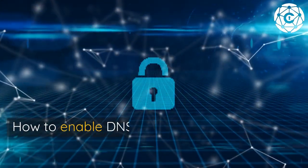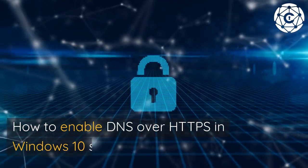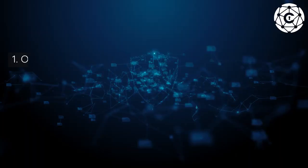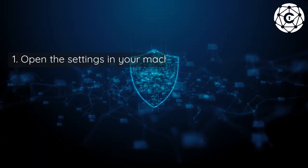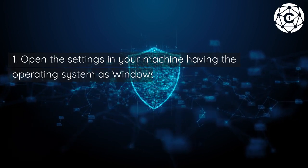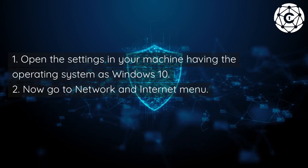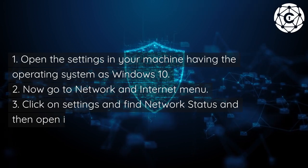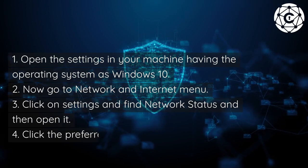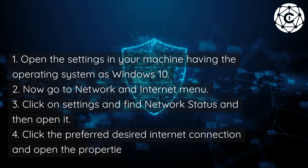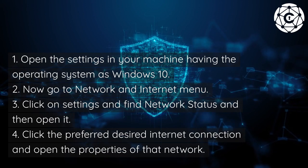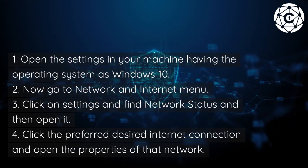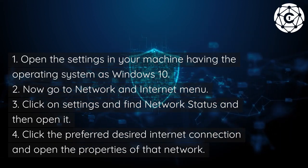How to enable DNS over HTTPS in Windows 10 settings. Step 1: Open the Settings on your Windows 10 machine. Step 2: Go to the Network and Internet menu. Step 3: Click on Settings, find Network Status, and open it. Step 4: Click the preferred internet connection and open the properties of that network.